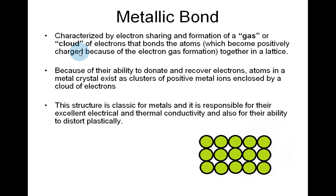Metallic bonds are characterized by electron sharing and the formation of a gas or cloud of electrons that bonds atoms together in a lattice. The atoms become positively charged because of the electron gas formation. Because of the ability to donate and recover electrons, atoms in a metal crystal exist as clusters of positive metal ions enclosed by a cloud of electrons. This structure is responsible for their excellent electrical and thermal conductivity and for their ability to distort plastically.